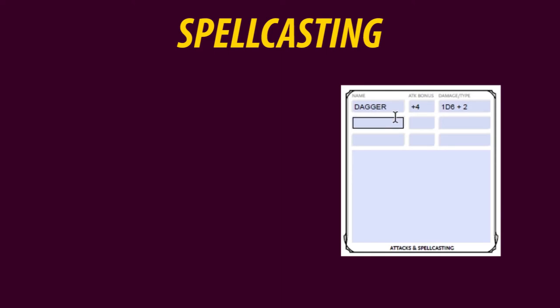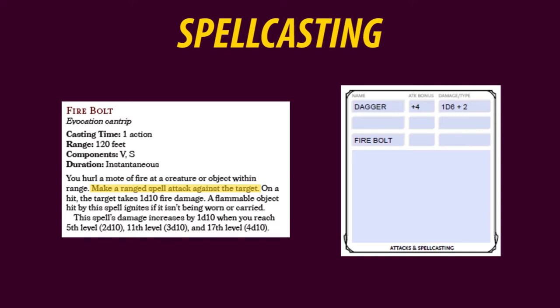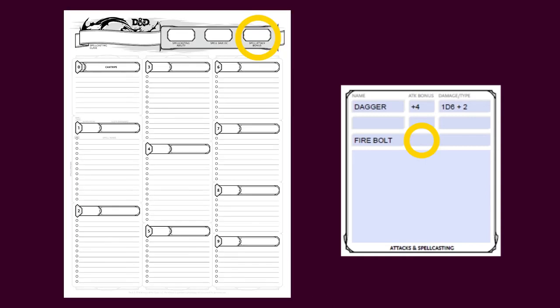This section is also for your spells. Let's say one of my wizard spells is the fire bolt cantrip. According to the spell information, I need to make a ranged spell attack against my target — so what attack bonus should I fill in? On the third page of the character sheet, there is something called spell attack bonus. It is that bonus which we transfer over here once we've calculated it. But remember, every spell is unique, so read the instructions thoroughly. Some spells force the enemy to resist them by making a dexterity saving throw instead of the caster having to make an attack roll.